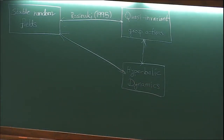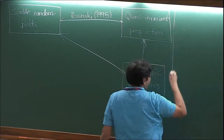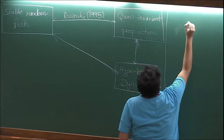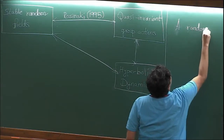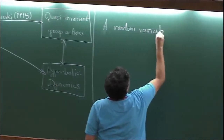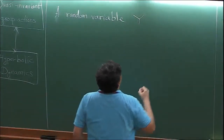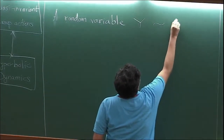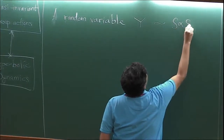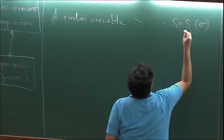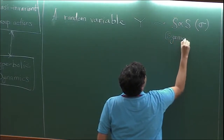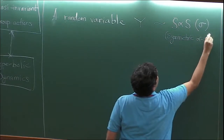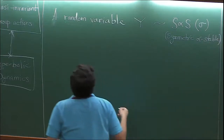I'll start from the definition of stable random fields. But before defining that, I have to define what is called a stable random variable. Here is the first definition. A random variable Y is said to follow — this is the notation — symmetric alpha stable distribution with scale parameter sigma. So SαS stands for symmetric alpha stable.